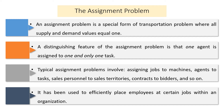Before moving to formulating the assignment problem, let's see some key points. An assignment problem is a special form of transportation problem where all the supply and demand values are equal to 1. As we discussed earlier, transportation problem is a special type of linear programming problem that focuses on how to minimize transportation cost from origin to destination.